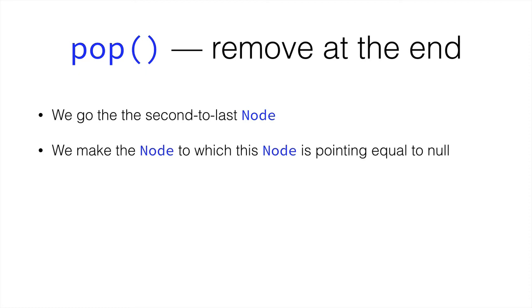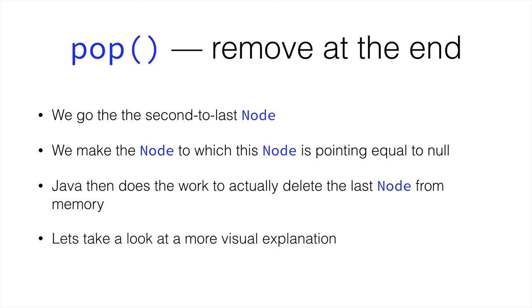and we make the node to which this node is pointing equal to null. So remember in the last presentation I mentioned that this is how removing nodes work. We make nothing point to them and then Java removes them from memory. Well, this is still what happens. But let's take a look at a more visual explanation.